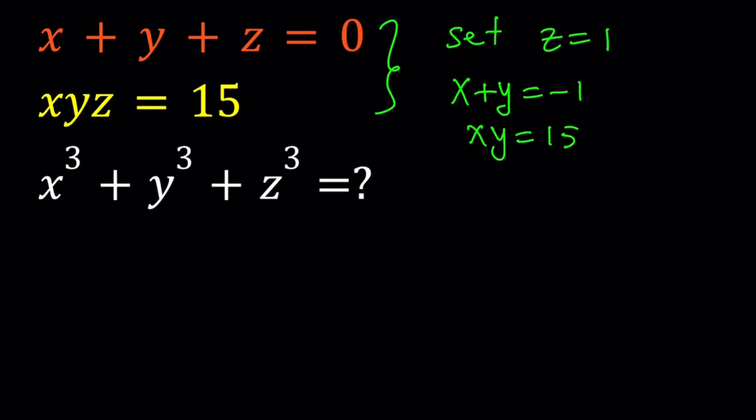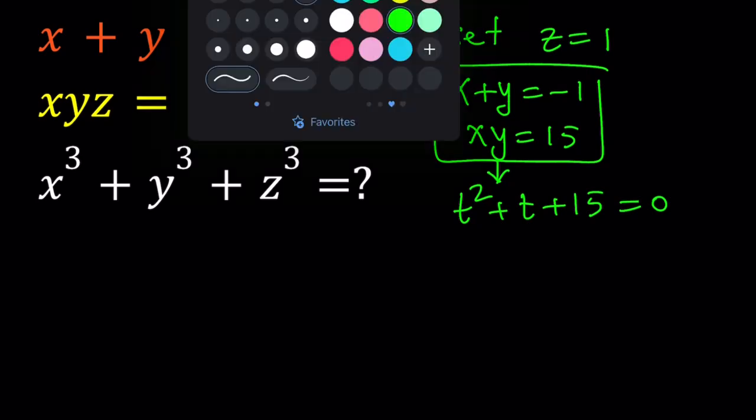Now if you go ahead and solve this system, you're going to get a quadratic equation from here. By using Vieta's formulas or otherwise, you're going to get something like t squared plus t plus 15 equals 0, where t represents x and y. Unfortunately, this equation has no real solutions. Too bad. Now I'll be presenting three methods and let's start with the first one.